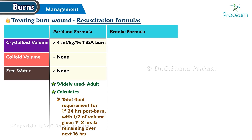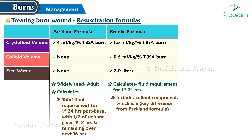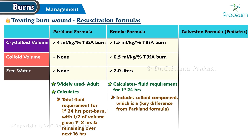Brook formula: crystalloid volume — 1.5 milliliters per kilogram per percent total body surface area burned; free water — 2 liters. The Brook formula also calculates the fluid requirement for the first 24 hours and includes a colloid component, which is a key difference from the Parkland formula — 1.5 milliliters per square meter burn area and 1.5 milliliters per square meter total body surface area.